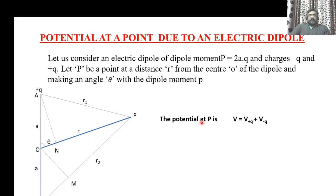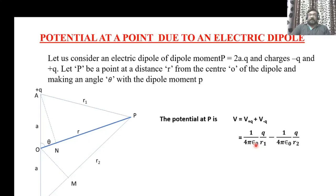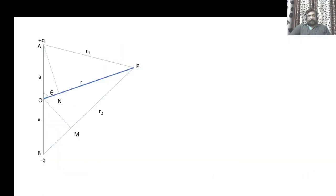To find the potential at P, we calculate V1 at P due to the positive charge, then the potential at P due to the negative charge, and sum them. The potential at P is given by V equal to V positive Q plus V negative Q. Substituting the individual potentials, V equals 1 over 4π epsilon-naught times Q over R1, minus 1 over 4π epsilon-naught times Q over R2, which equals Q over 4π epsilon-naught times open bracket 1 over R1 minus 1 over R2 close bracket. Now we want to find 1 over R1 minus 1 over R2.